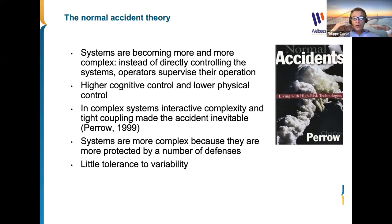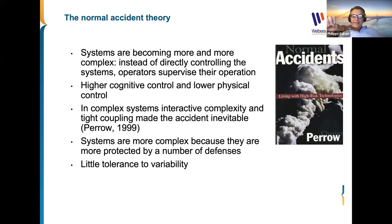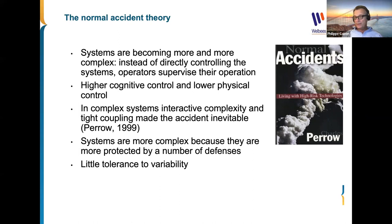This leads to higher cognitive control rather than physical control — you supervise computers that control the aircraft rather than directly flying it. In complex systems, interactive complexity and tight coupling make accidents inevitable. Tight coupling means that between different parts of the system, a small variability can provoke big consequences. Also, the more we try to protect a system with many defenses, the more complex and difficult to predict it becomes — with little tolerance to variability.